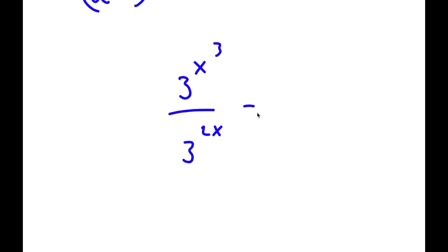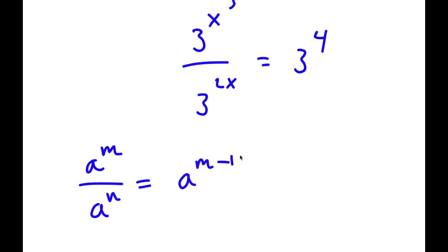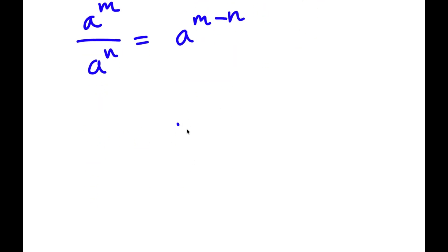This is equal to 3 to the power of 4. Now, if I have something in the form a to the power of m over a to the power of n, this equals a to the power of m minus n. So 3 to the power of x cubed over 3 to the power of 2x equals 3 to the power of x cubed minus 2x, which equals 3 to the power of 4.